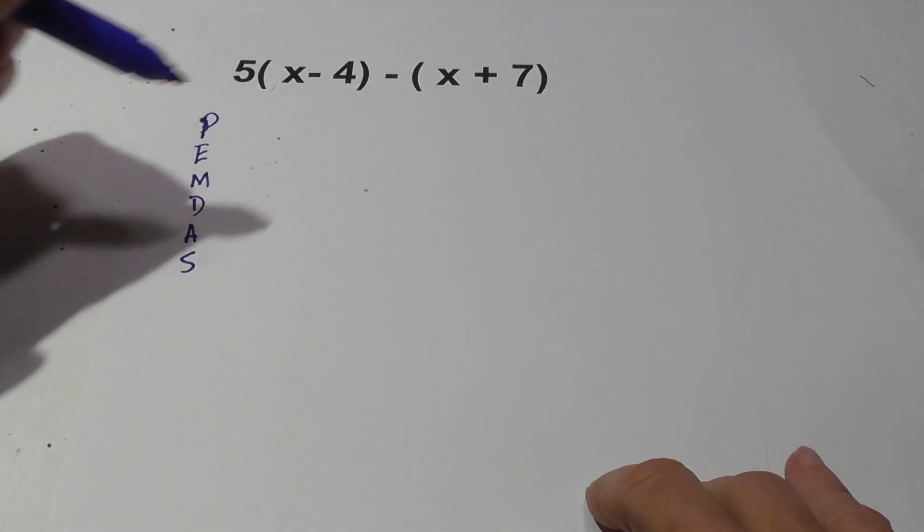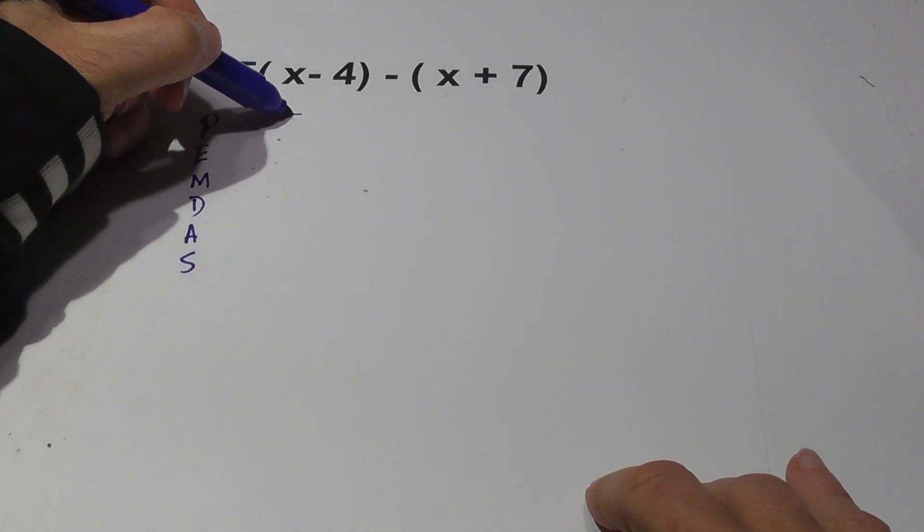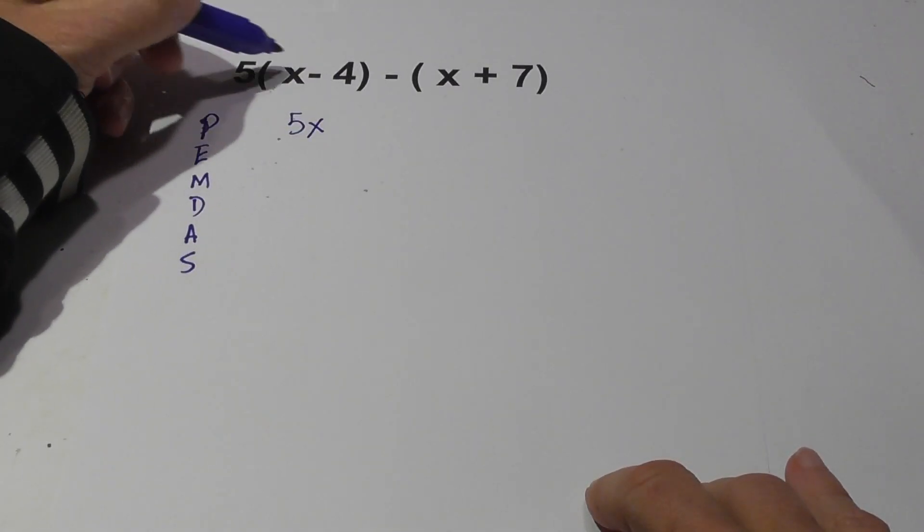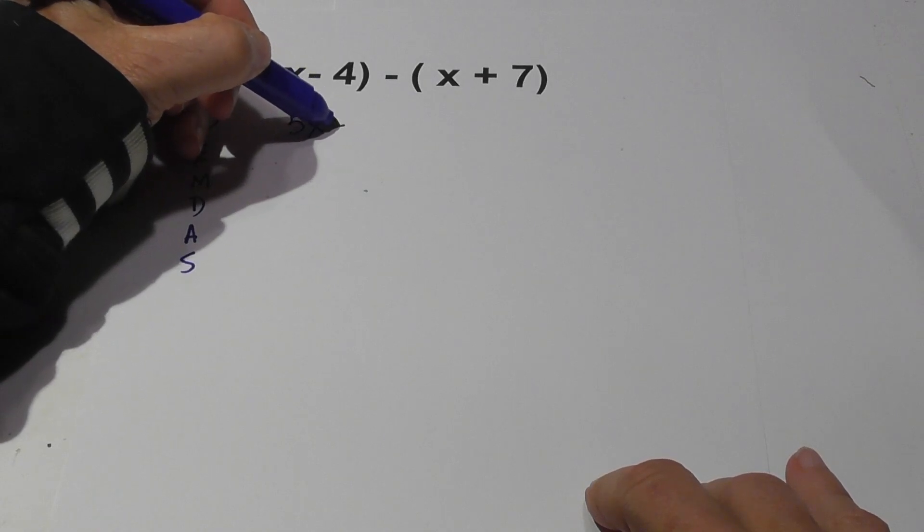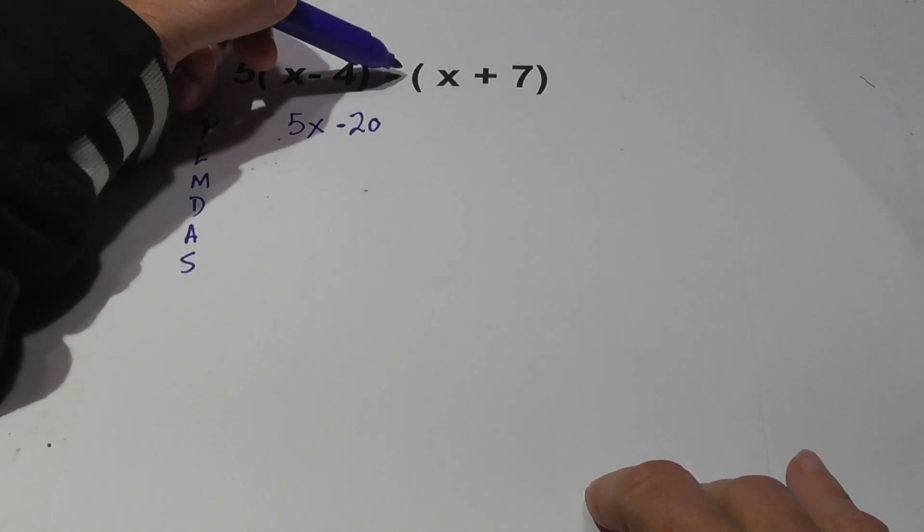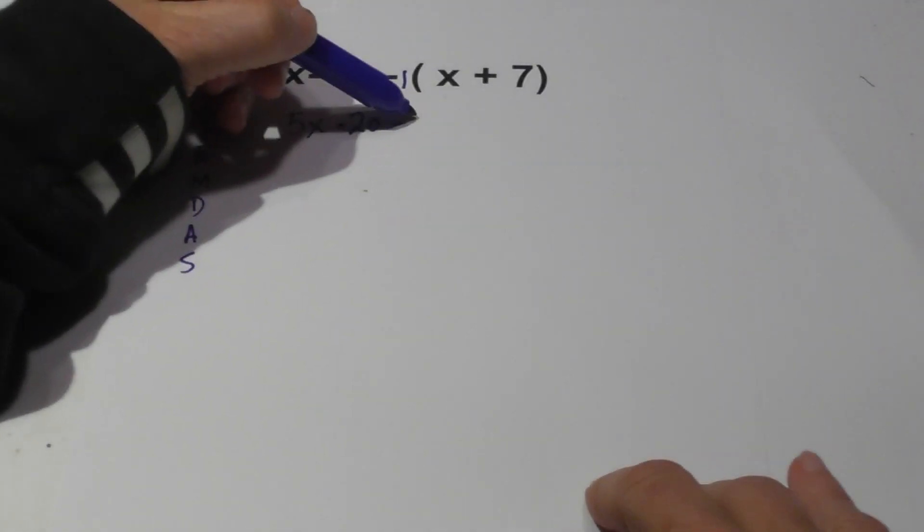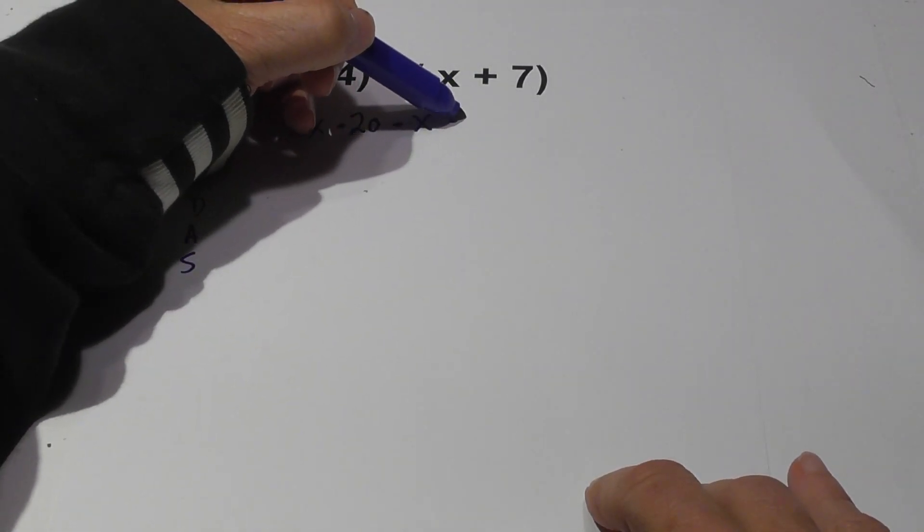When we look at this problem we have a parenthesis. I'm going to distribute the 5. 5 times x is 5x. 5 times negative 4 is negative 20. Watch the signs. Now this next one we need to distribute and you can think of the negative sign as a 1. Negative 1 times x is negative x. Negative 1 times 7 is negative 7.